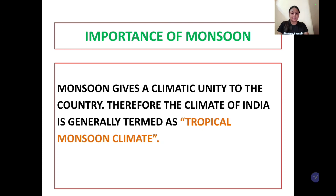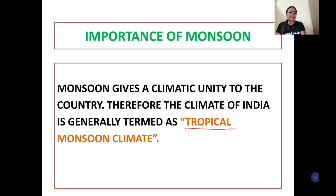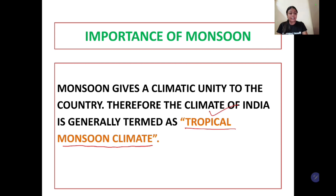If we talk about the importance of monsoon — it brings rainfall throughout the country, and therefore the climate of India is termed as a tropical monsoon climate. No doubt India tropical aur subtropical region mein lie karta hai, uska effect hai, aur monsoon ka bhi hai. So we cannot separate monsoon from the climate of India, so we call it tropical monsoon climate.